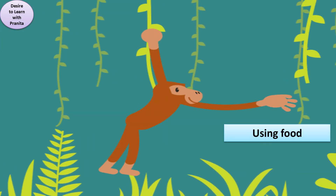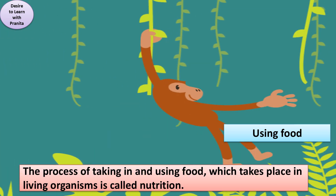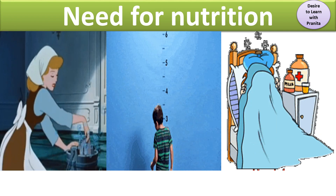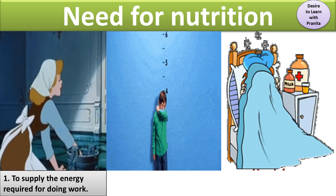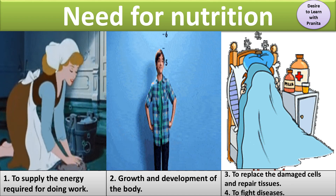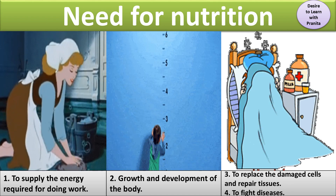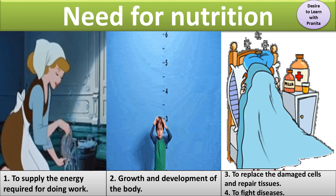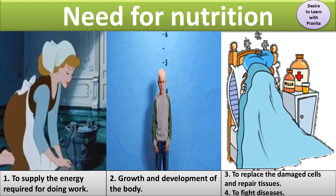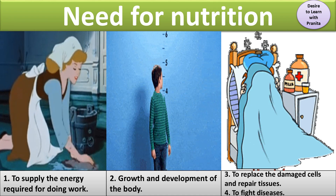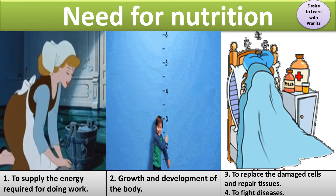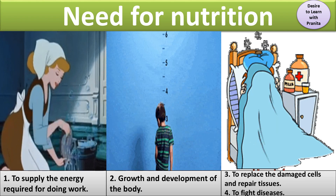The process of taking in food which takes place in a living organism is called nutrition. Why is there a need for nutrition? We need nutrition for the growth and development of the body, to replace damaged cells and repair tissues, and to fight with diseases. For example, in the corona pandemic we need to take nutrition in our daily food to keep us healthy, to fight with viruses, and to boost our immunity. Nutrition is very important for our body.